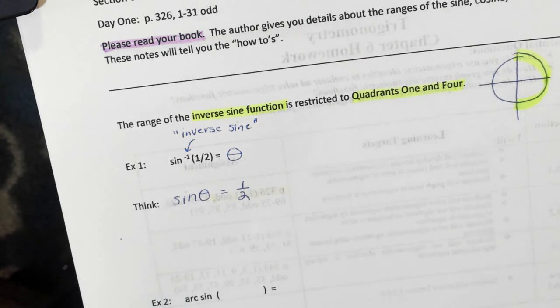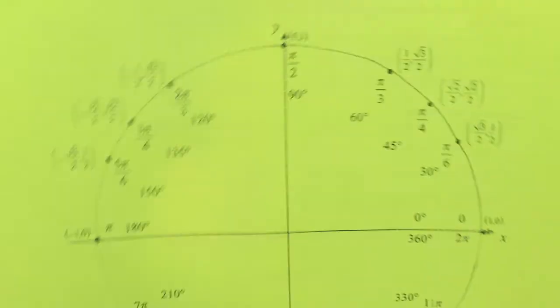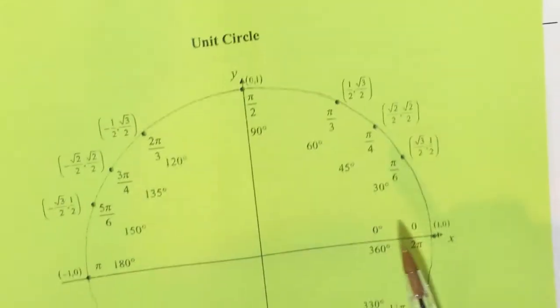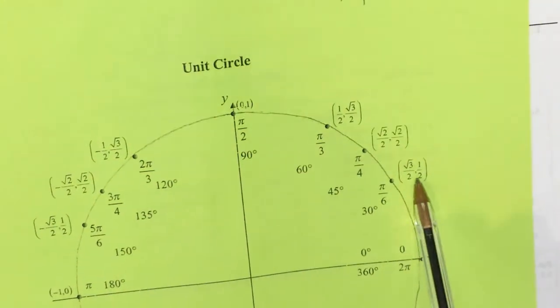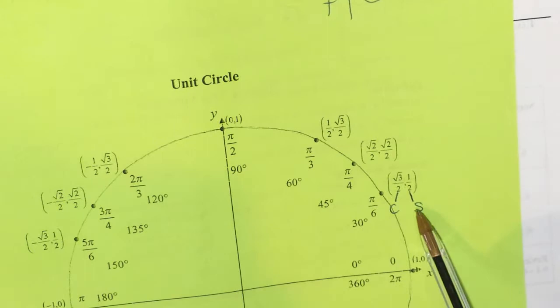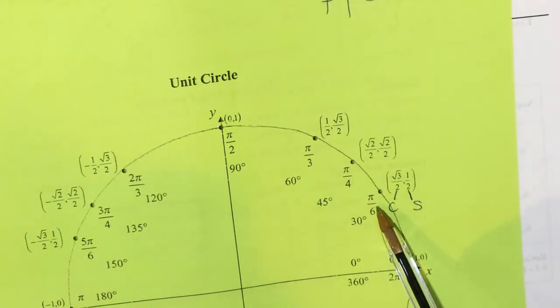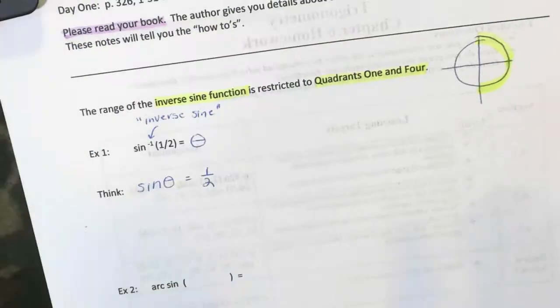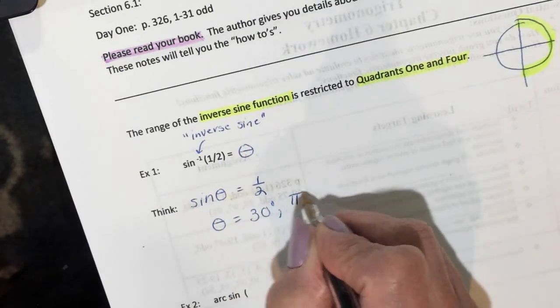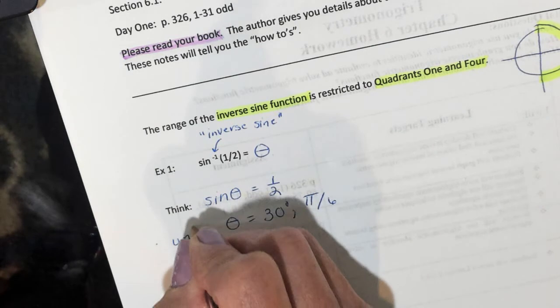Get out your unit circle. We're going to look in quadrant 1 or 4. Where is sine positive? It's only positive in quadrant 1. So let's find where sine equals 1/2 — we know the first coordinate is cosine and the second is sine. Sine was 1/2 at 30 degrees, or if we're doing radians, pi over 6. Write yourself a note on how we got that answer.